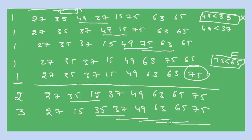In the fourth pass, compare 27 and 15 — condition is false, so swap to get 15 and 27. The final sorted array is: 15, 27, 35, 37, 49, 63, 65, 75. All values are now sorted. We have found the final sorted elements using bubble sort. Thank you for watching this video — please subscribe for more videos.